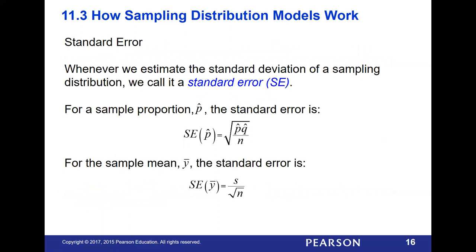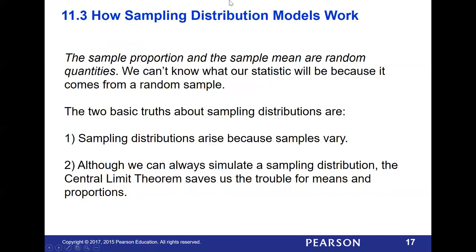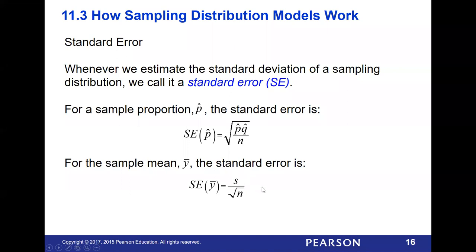When estimating the standard deviation of a sampling distribution, we call it a standard error. Any time you're using your means or an additional standard deviation level, you move up and it becomes the standard error. The standard error is basically the same calculation, only you start with your standard deviation as the numerator. Note that the S here refers to your sample standard deviation, not your population standard deviation. When calculating the standard error, we use the sample standard deviation — not the population SD.